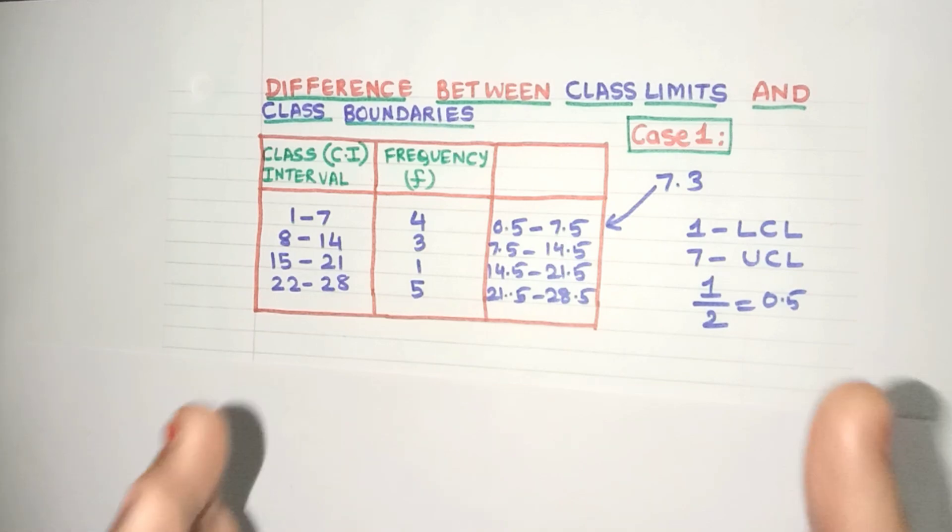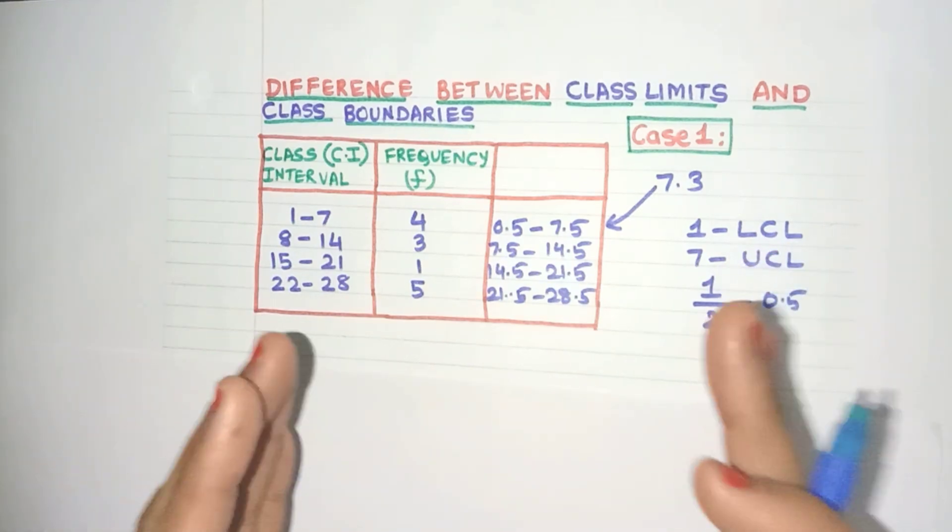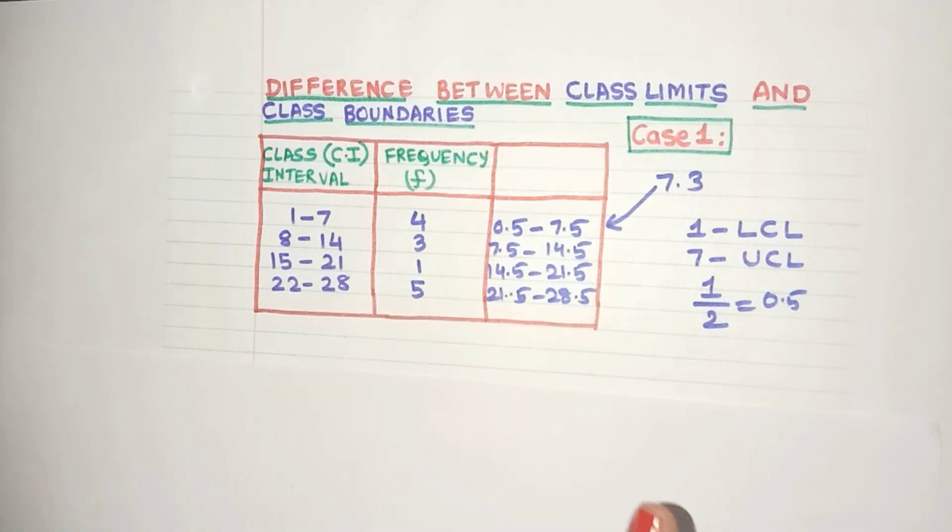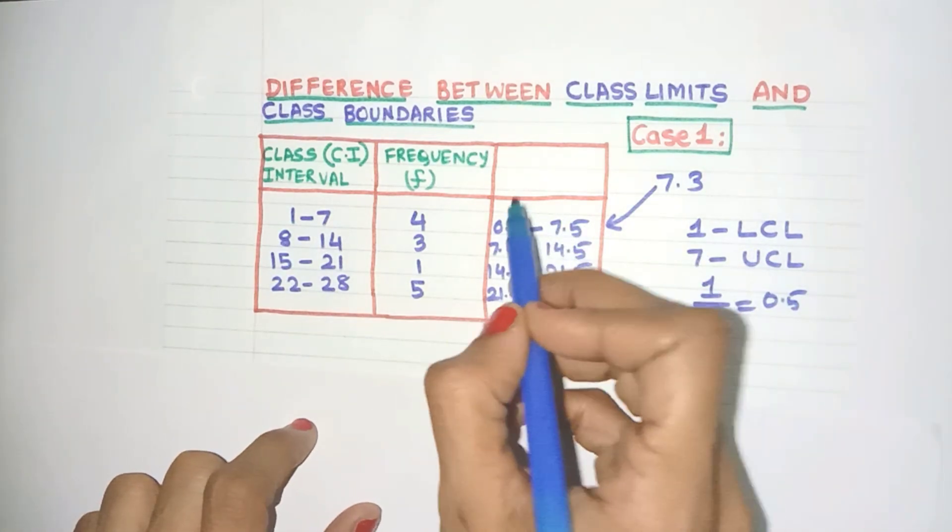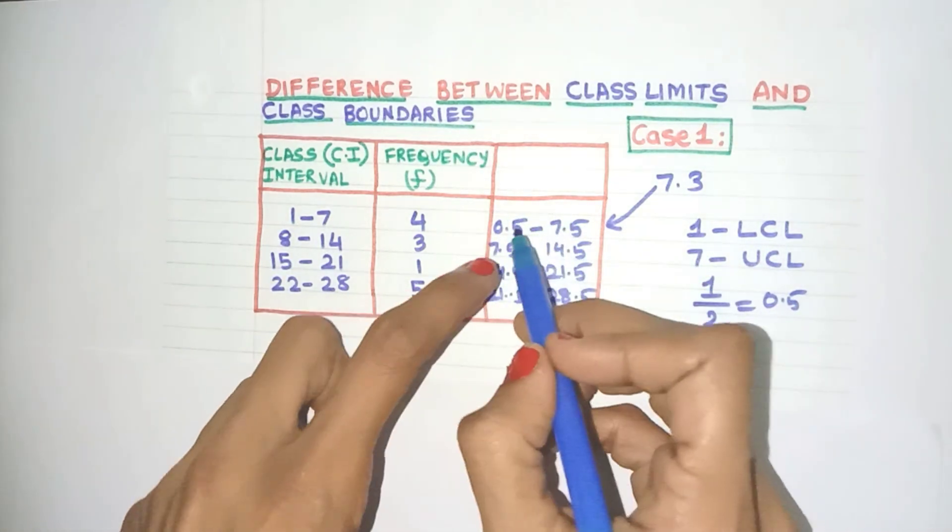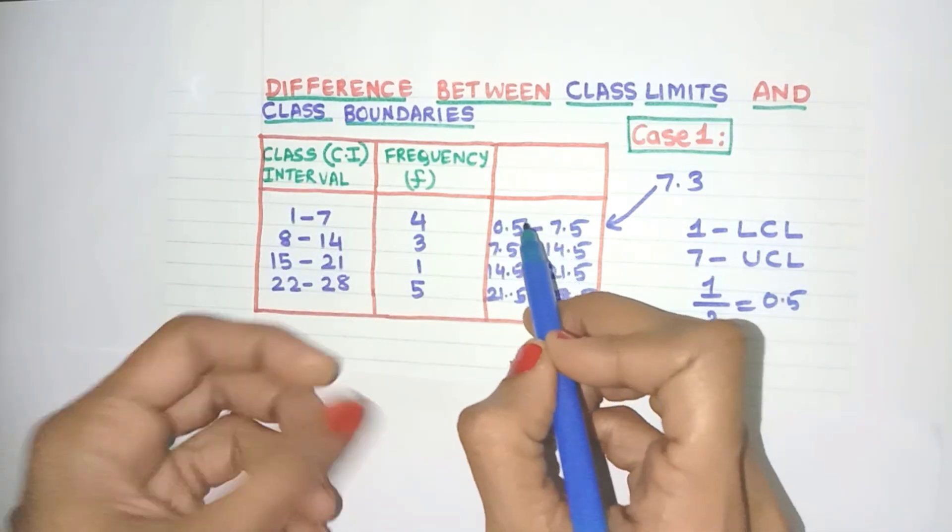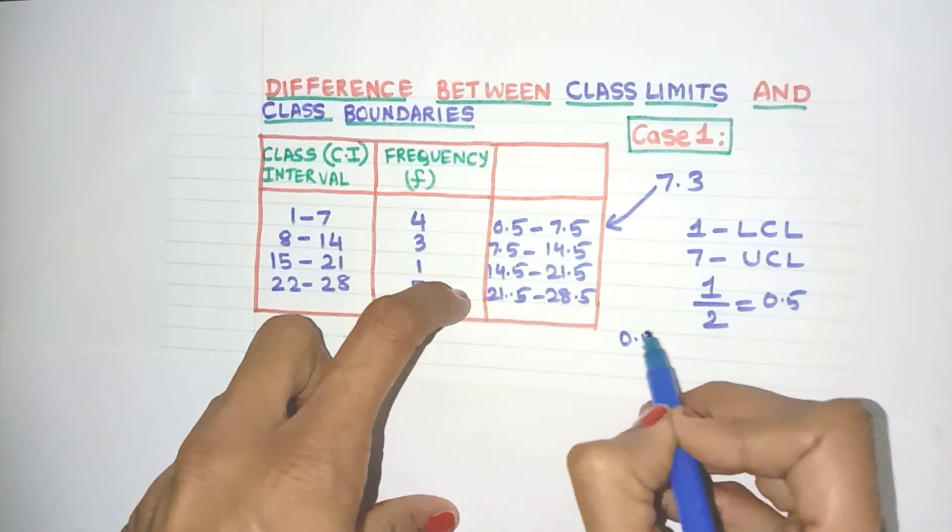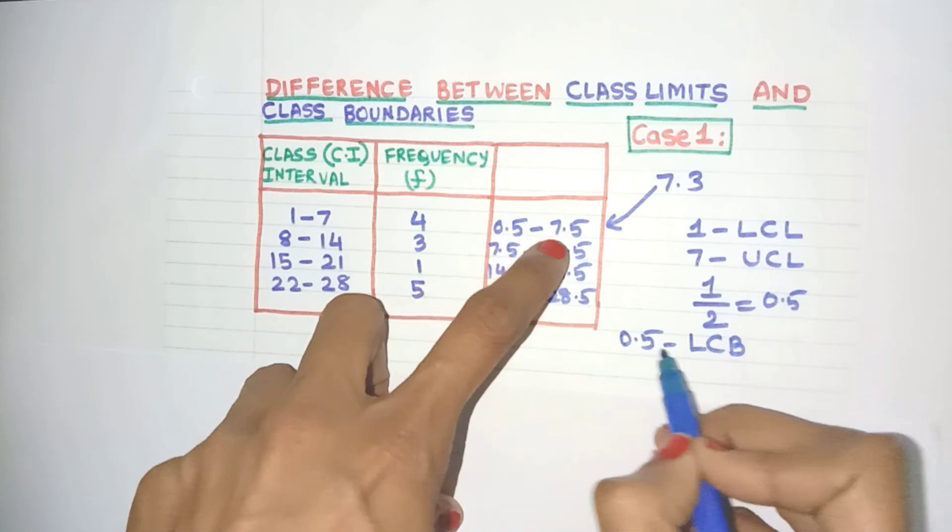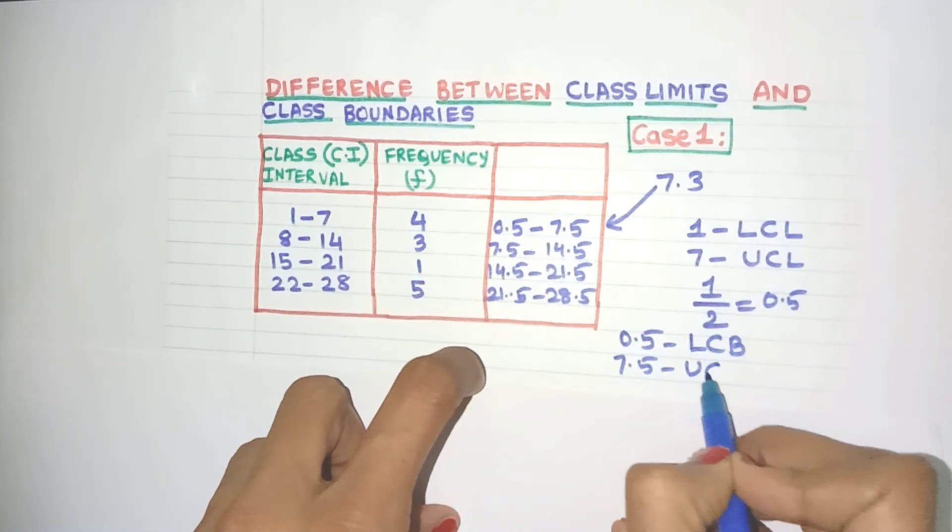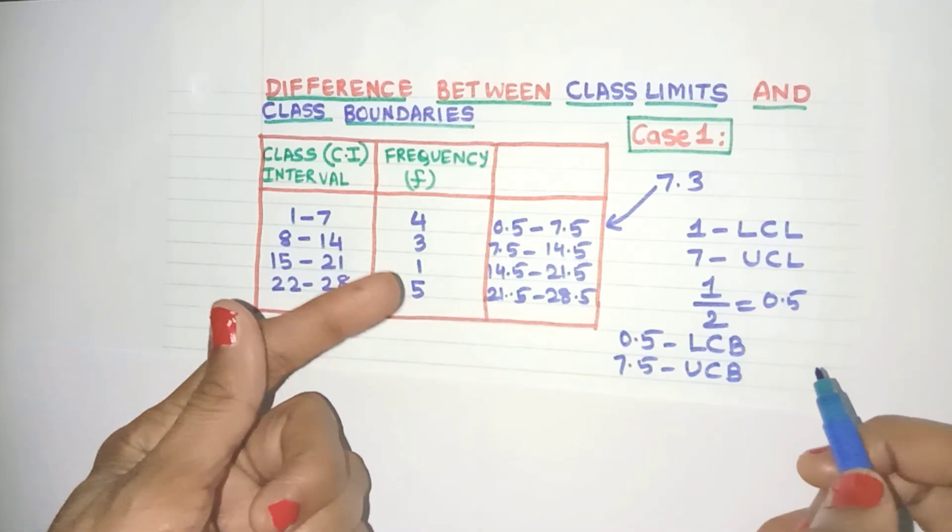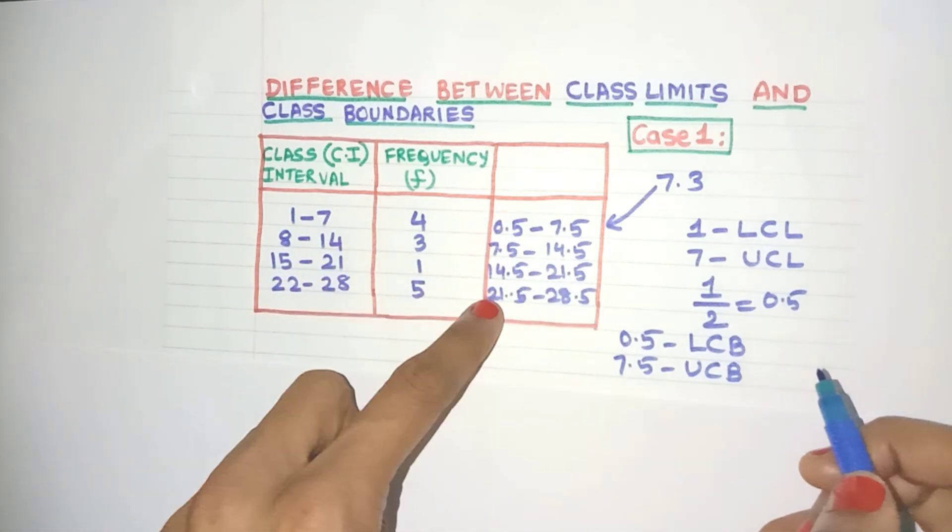So how is it clear now? Because we have now set clear boundary on what is the beginning of each class and what is the ending of each class. That's why these are known as boundaries. So because this is the minimum value, this is known as the lower class boundary. So here 0.5 is the lower class boundary and 7.5 is the upper class boundary. So this way you can find the lower class boundary and upper class boundary for all the class intervals.